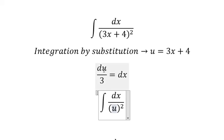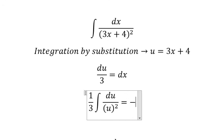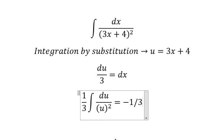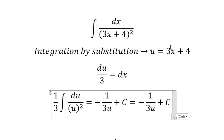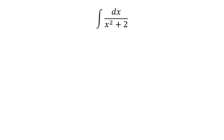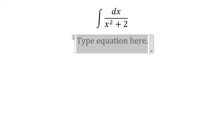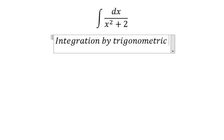The dx we change for this one, so we get negative one over three u plus C, in terms of u. That's about this one. For question number two, we need to use integration by trigonometric substitution.